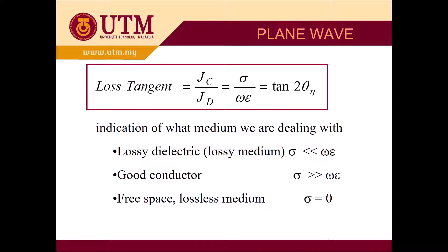For the lossy medium, we will discuss about the loss tangent. Basically, the loss tangent is a ratio between the conduction current density and also the displacement current density J_d. When we solve this, we get that the loss tangent equals sigma divided by omega epsilon, as we proved in previous chapters. This loss tangent can also be represented by tangent 2 theta_n.